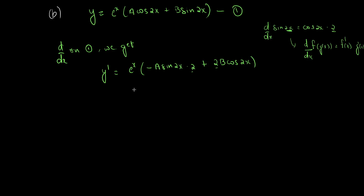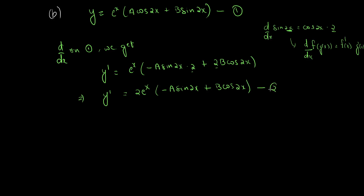Taking 2 outside, this becomes 2 e raised to x times y dash. That implies y dash equals e raised to x into minus a sin 2x plus b cos 2x. Let this be equation 2.